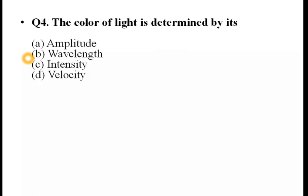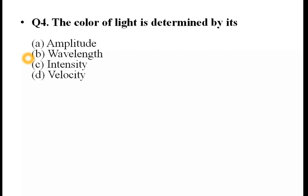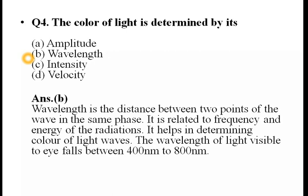The color of light is determined by its color. Whether it's white light, violet, or red — the sky appears red and blue at different times. What is the reason for this color change? The answer is option B: wavelength. The color of light is determined by its wavelength.